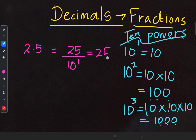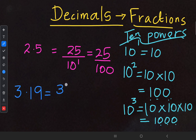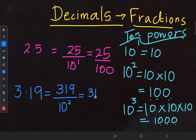So 25 upon 10 should be our fraction for 2.5. When we deal with another question, 3.19: here we write the numerical value 319, divided by the denominator based on how many digits after the decimal point — 1 and 2, there are two digits — so 10 to the power of 2, that means 319 upon 100.